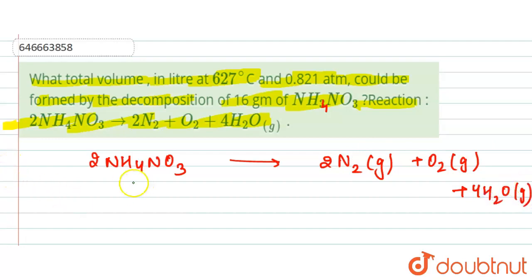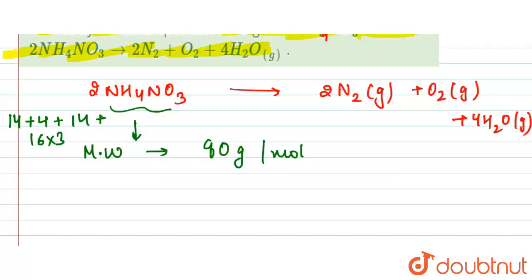Now if we see this, the molecular weight is 80 grams per mole for NH4NO3. It is 14 plus 4 into 1, plus 14 plus 16 into 3, so that is 80 grams per mole.